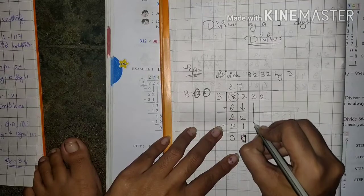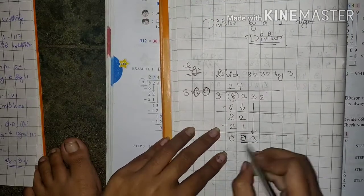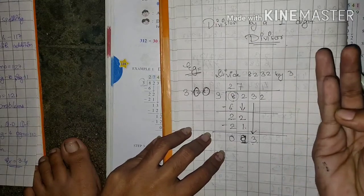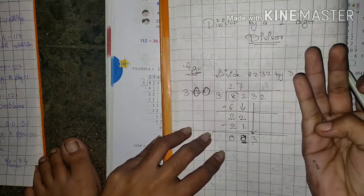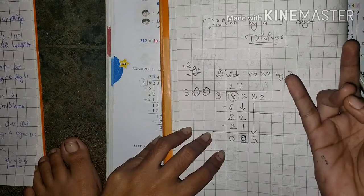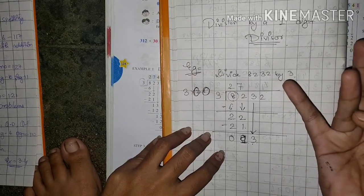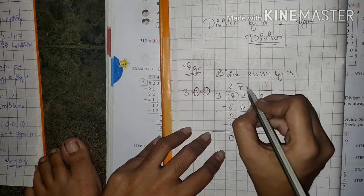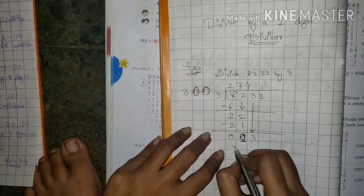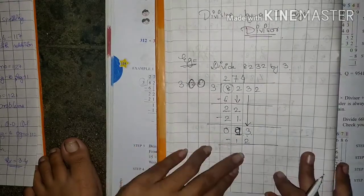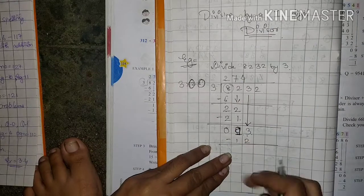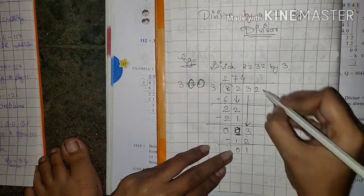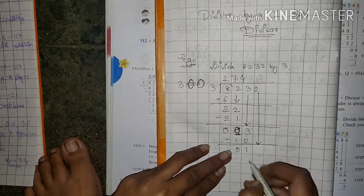Now this 3 — we bring it down. So now in the 3 times table, tell me the number smaller than 13. 3 ones are 3, 3 twos are 6, 3 threes are 9, 3 fours are 12, 3 fives are 15. 15 is greater than 13. Which is smaller? 12. How many times does 12 come? 4 times. 3 fours are 12. Now 3 minus 2 is 1 and 1 minus 1 is 0.